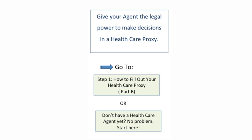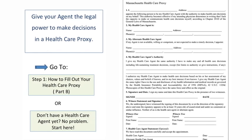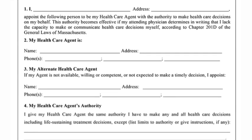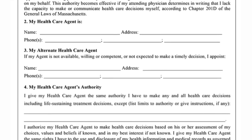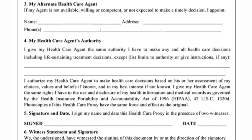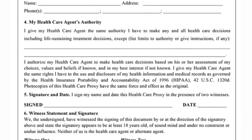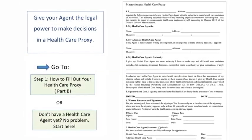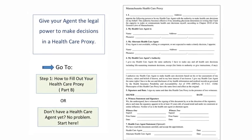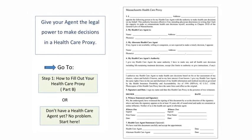Now that your trusted person has agreed to be your agent, it's time to give the agent the power to make decisions by appointing them in a healthcare proxy. This is the Honoring Choices healthcare proxy, which you can do yourself. We'll talk more about how to fill that out in Step 1, Part B. Or if you're not sure who your healthcare agent is yet, no problem — you just want to follow Steps 2 and 3 to make your plan.